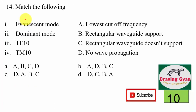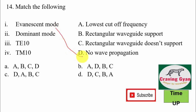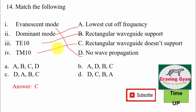Question 14: you have to match the following — evanescent mode means what, dominant mode means what, TE10 means what, TM10 means what. We know that evanescent mode means the wave cannot propagate, dominant mode means lowest cutoff frequency, TE10 means rectangular waveguide will support it, and TM10 means rectangular waveguide will not support it. Hence the suitable matching is DABC, that is option number C is correct.